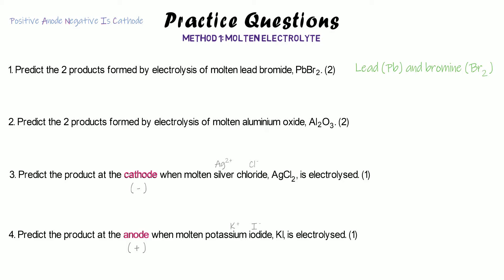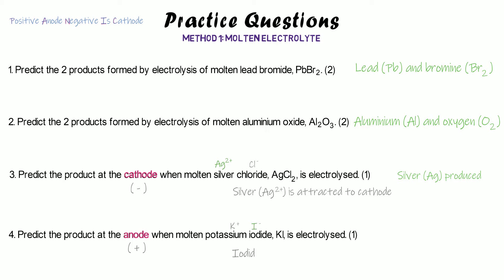In the first case, for molten lead bromide, we produce lead and bromine — those are the two things that make up lead bromide. For aluminium oxide we produce aluminium and oxygen. For silver chloride, the cathode is negative so it attracts the positive silver ions — therefore silver is produced, not chlorine, because chloride is negative and wouldn't be attracted to the negative electrode. For the last one, the anode is positive so the negative iodide ions are attracted to it — therefore we produce iodine.